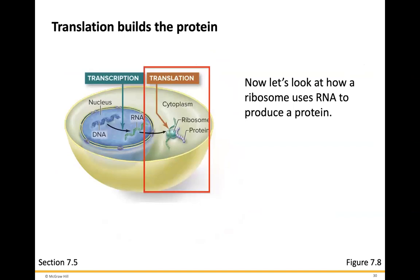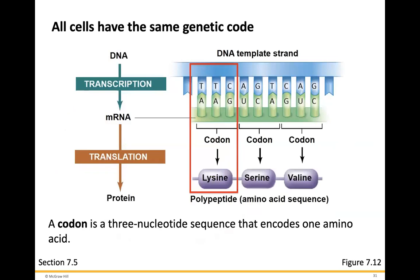Translation is the process that builds a protein. We use the messenger RNA strand to produce a protein strand. Translation occurs by reading what we call codons — a codon is a three-nucleotide sequence that encodes one amino acid. All cells, regardless of species, share the same genetic code. For example, AAG is the codon for lysine, whether you're talking about E. coli or human cells.